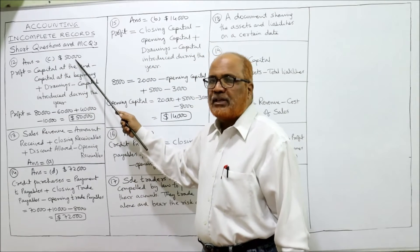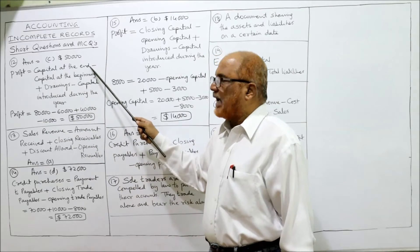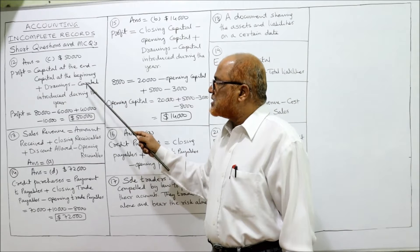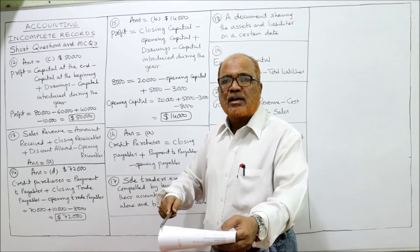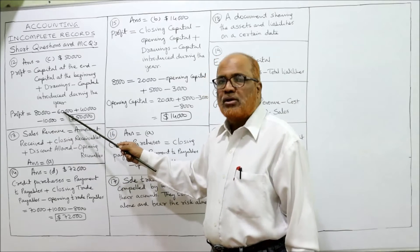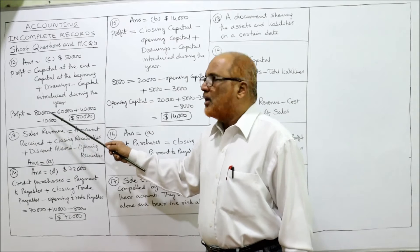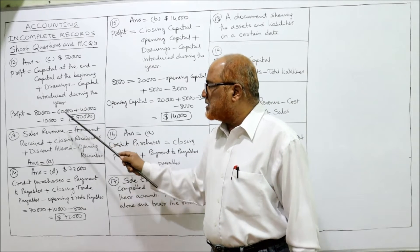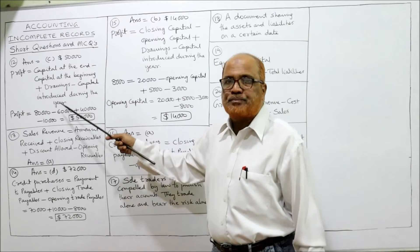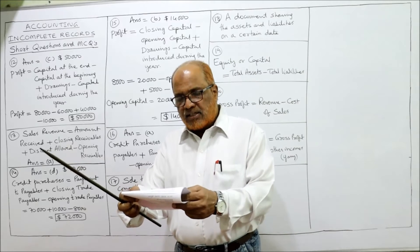Profit earned = capital at the end − capital at the beginning + drawings − capital introduced during the year. Capital at end: $80,000; capital at beginning: $60,000; drawings: $40,000; capital introduced: $10,000. So: 80,000 − 60,000 + 40,000 − 10,000 = $50,000. That is the profit earned. The only thing you have to remember is this equation.